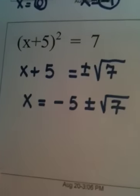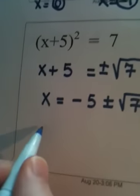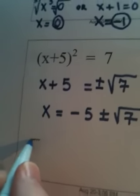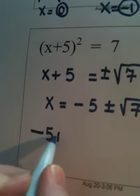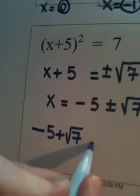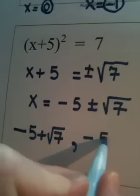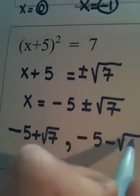So even though you don't have to write it out, there are two separate answers here. One of them would be negative 5 plus radical 7, comma, negative 5 minus radical 7.